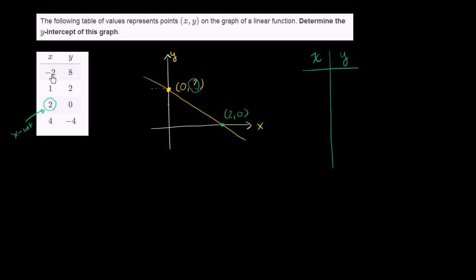They already tell us that when x is negative 2, y is 8. And I actually want to think about what happens when x is negative 1, when x is 0. Then they tell us when x is 1, y is 2. When x is 2, y is 0. This right over here is the x-intercept. When x is 4, y is negative 4.